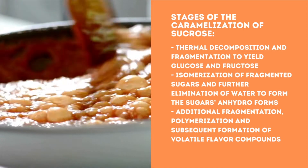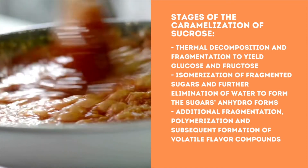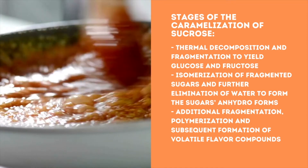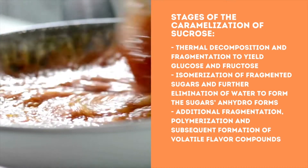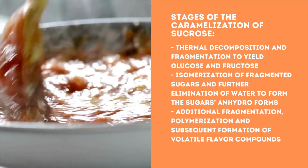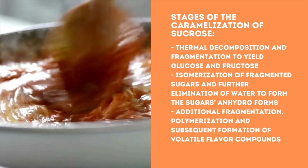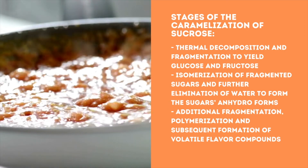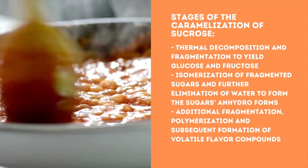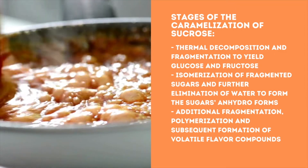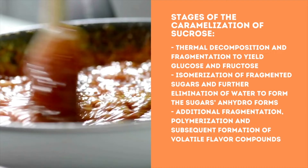Second stage: isomerization of fragmented sugars — aldoses to ketoses — and further elimination of water to form the sugars' anhydro forms. Third stage: additional fragmentation, polymerization, and subsequent formation of volatile flavor compounds such as furan, maltol, ethyl acetate, diacetyl, and others.